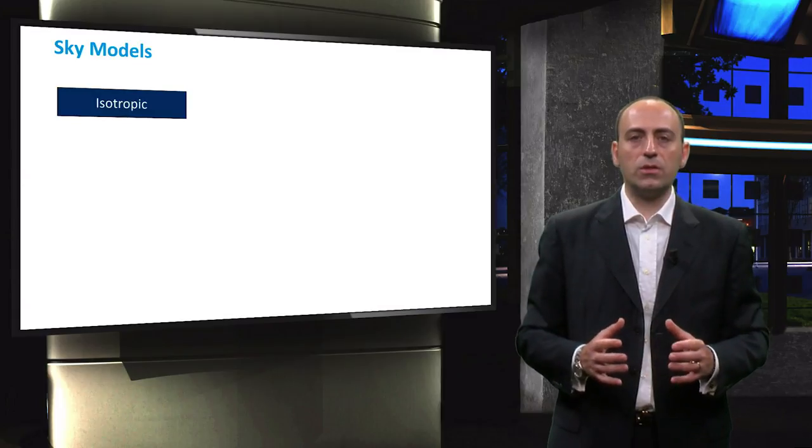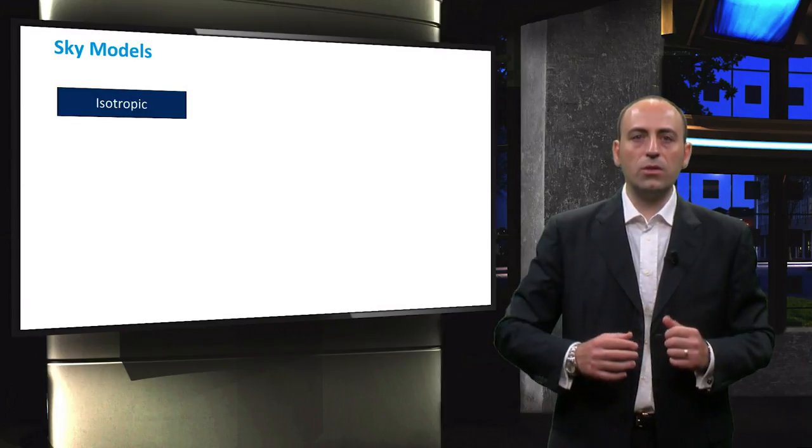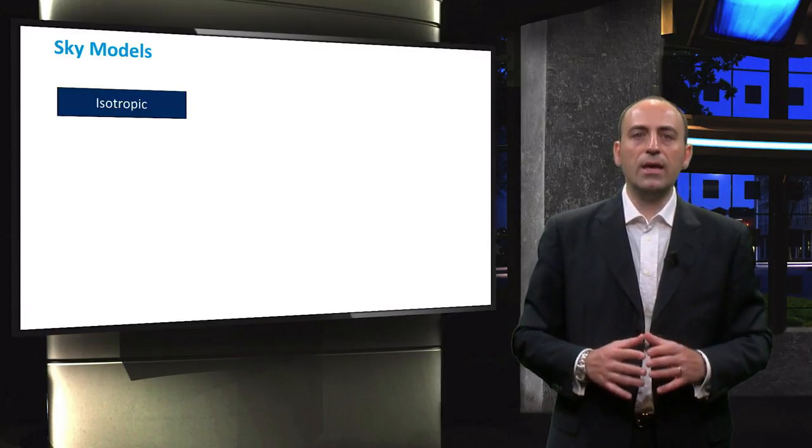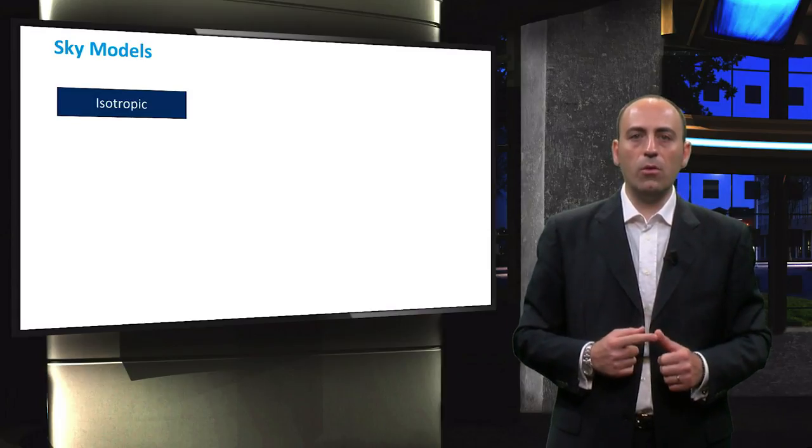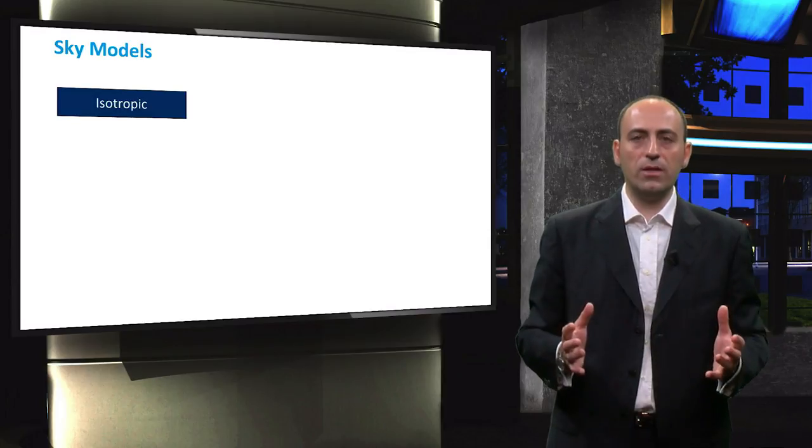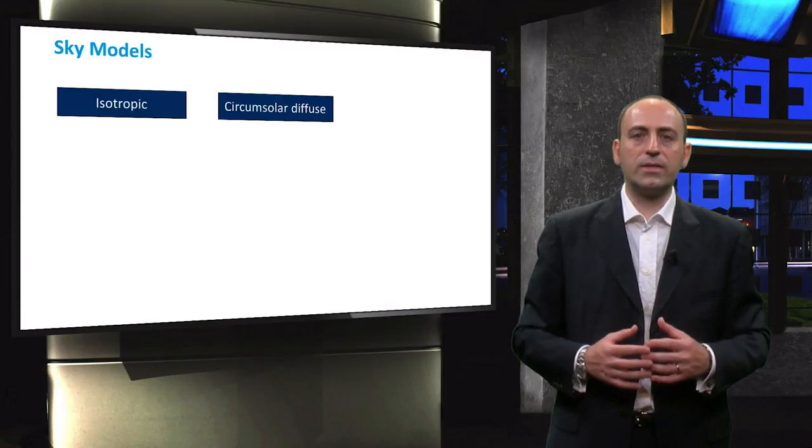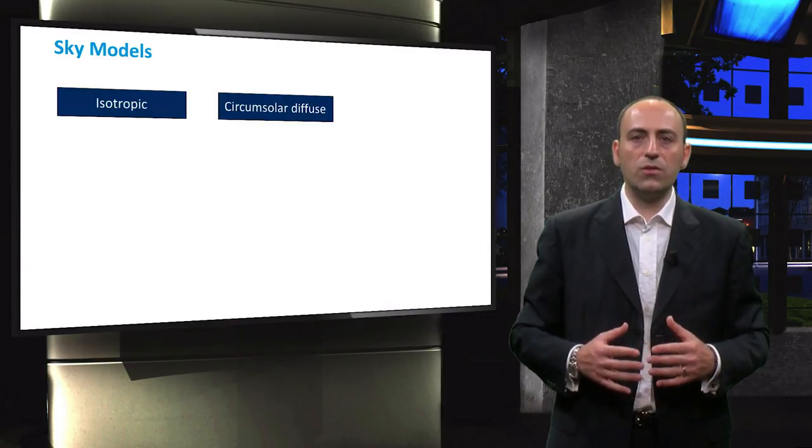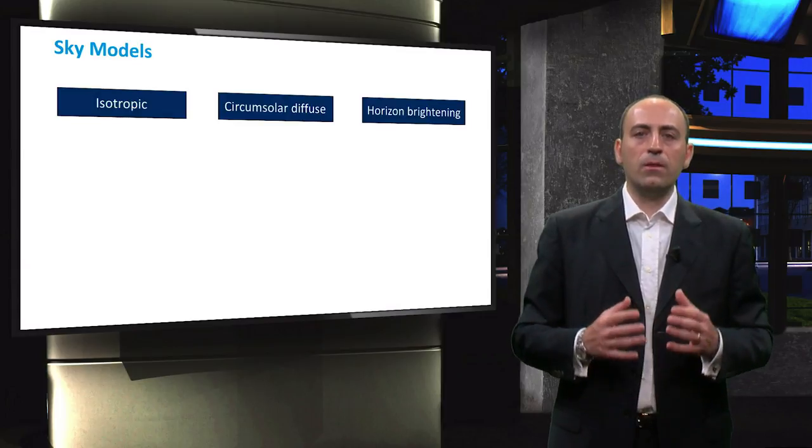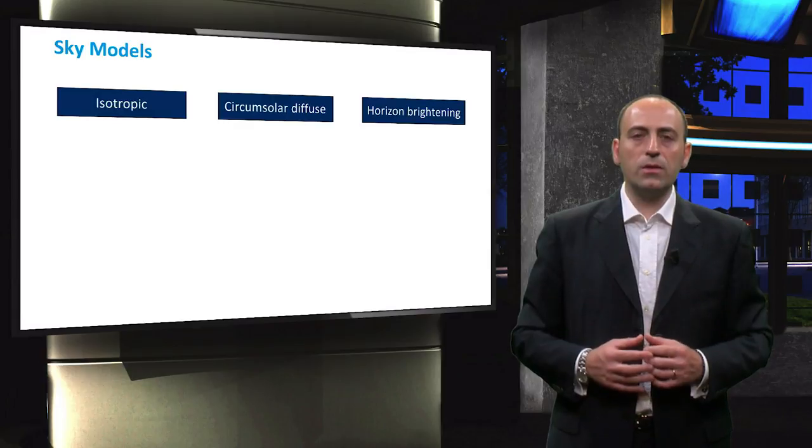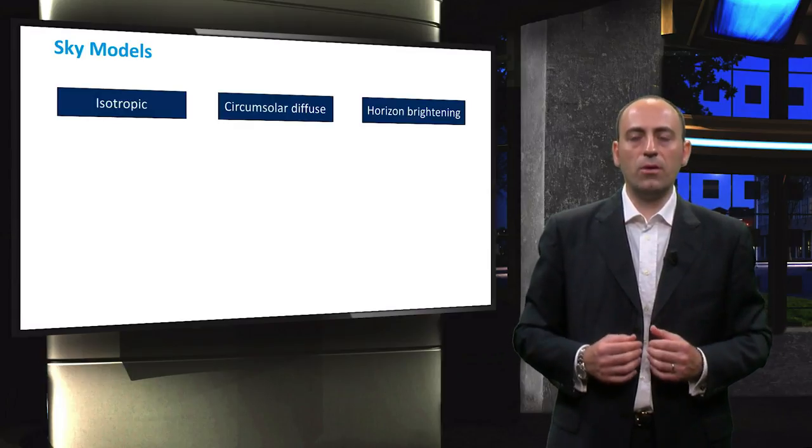Here we show a couple of sky models with varying levels of accuracy. First of all, it is important to understand that the diffuse radiation from the sky is typically subdivided into three components. The isotropic component represents the uniform irradiance from the sky. The circumsolar diffuse component, which represents the forward scattering of radiation concentrated in the area immediately surrounding the sun, is the second. And finally, the horizon brightening component. Sky models use different semi-empirical approaches for estimating the combination of these components.